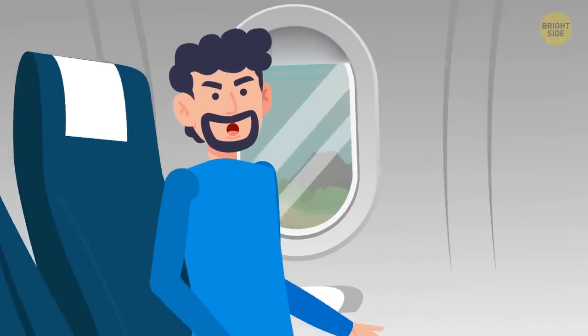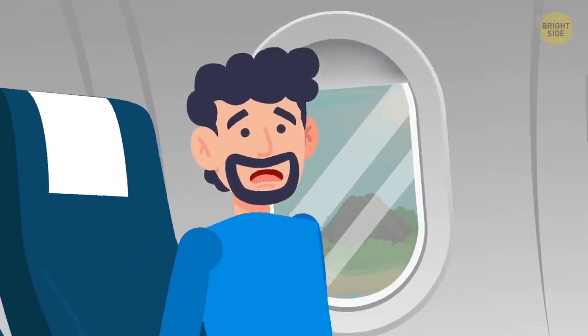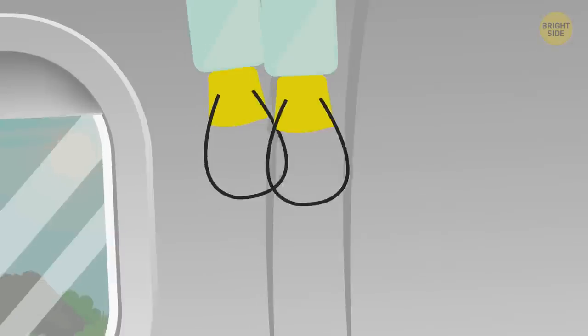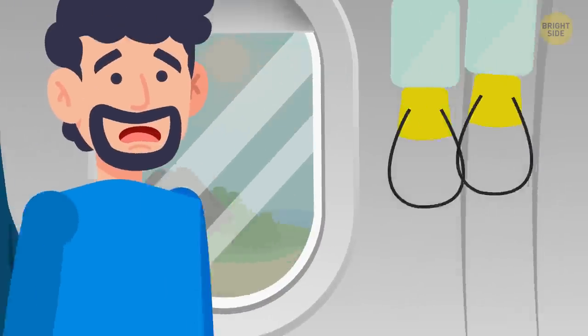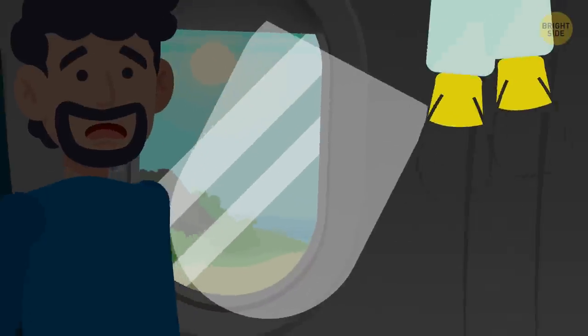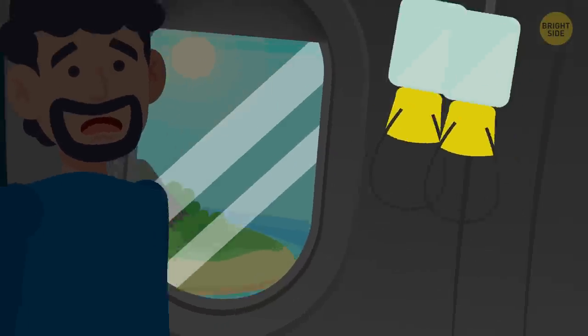The turbulence tremors lasted for several minutes before it all got worse. That's when oxygen masks fell down. But what terrified the passengers the most was one inner window pane that came loose during the turbulence.